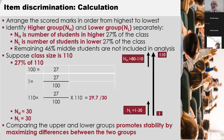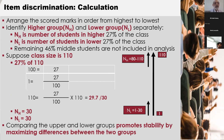The discrimination index can be easily calculated by software in an optical reader. But to understand how it is calculated and how it is utilized, let's look at these few slides. If we want to calculate it manually, we arrange the scores in order from highest to lowest — we put all the marks in this order.